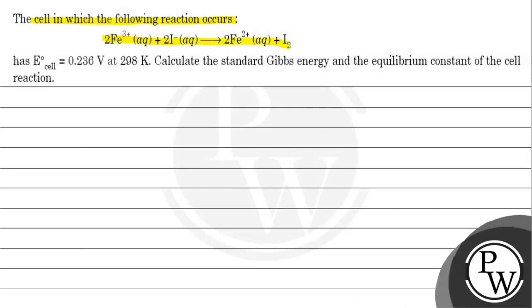It gives 2Fe²⁺ in aqueous state plus I₂. It has standard electrode potential equal to 0.236 volts at 298 Kelvin. Calculate the standard Gibbs free energy and the equilibrium constant of the cell reaction.